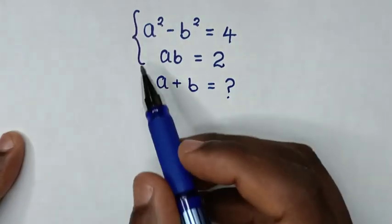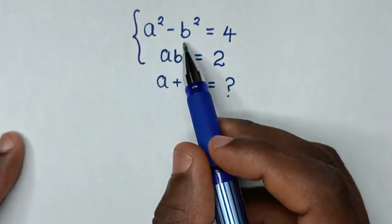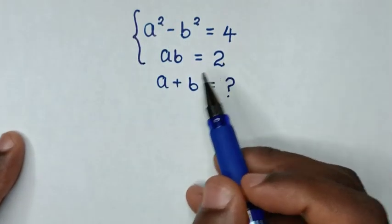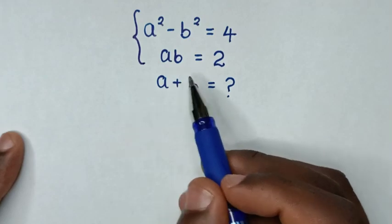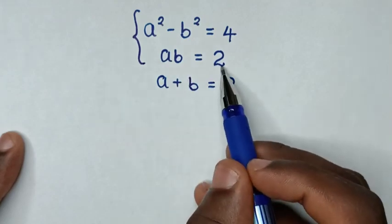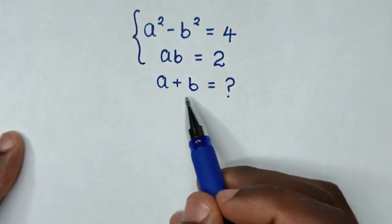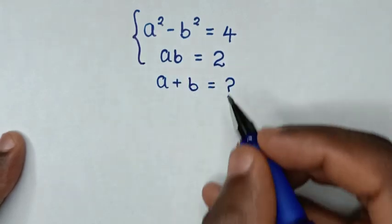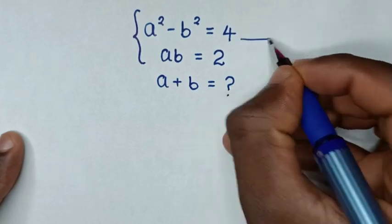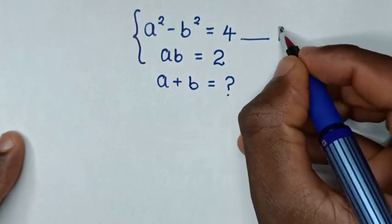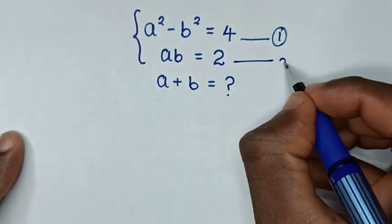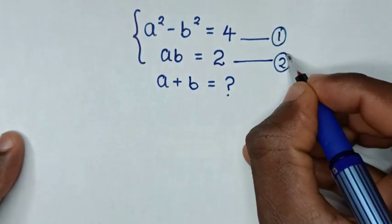Hello. How to solve: a squared minus b squared is equal to 4, and ab is equal to 2, to find the value of a plus b. So first we let this equation 1 and this we let equation 2.